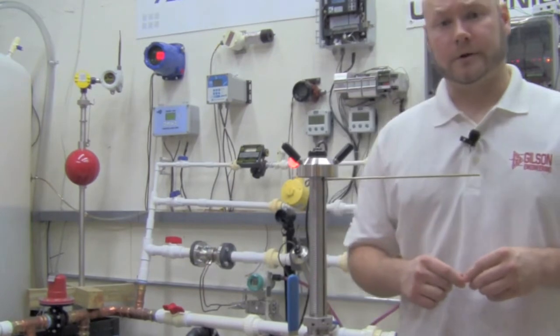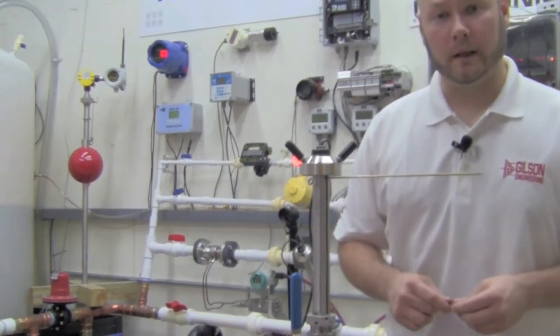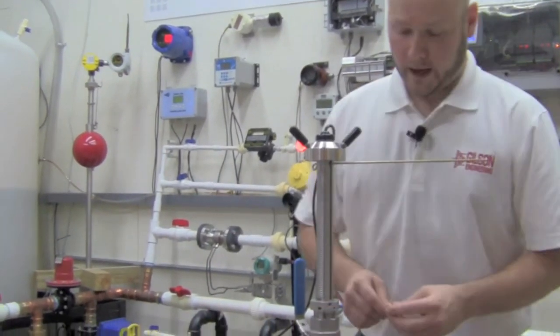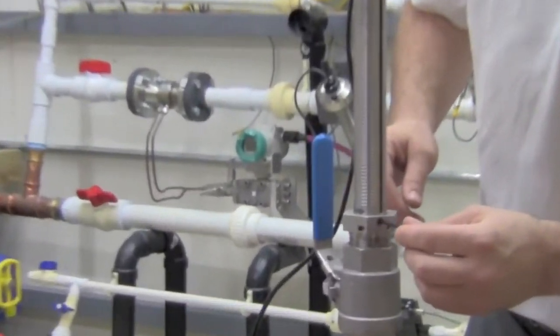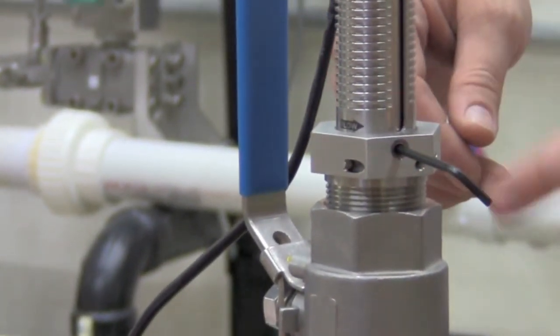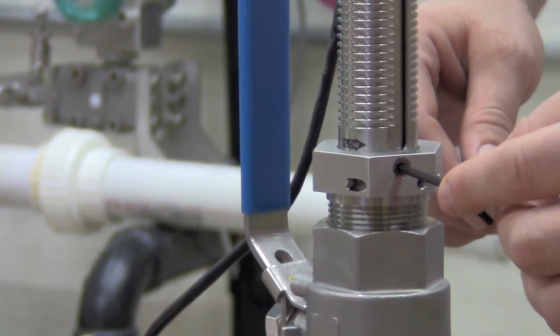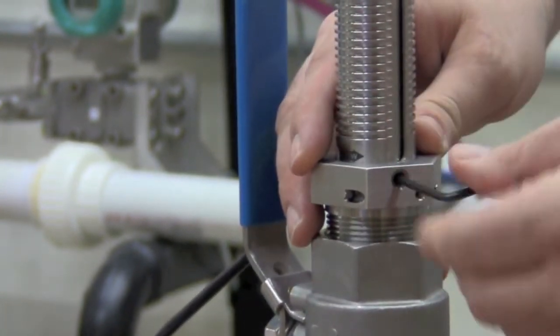Now that we've calculated our insertion depth with the supplied worksheet in the manual, we're going to come back to the unit, and we're going to adjust the friction lock. At the base of the nut, you're going to use the supplied Allen wrench, and you're going to snug this up.